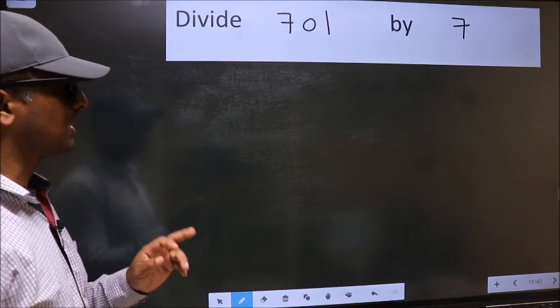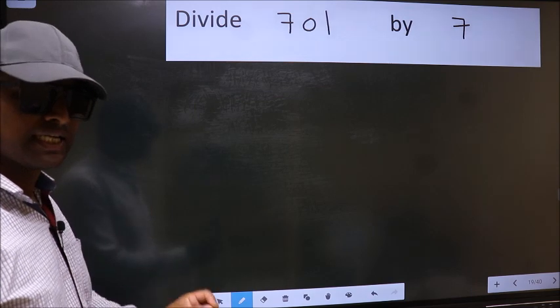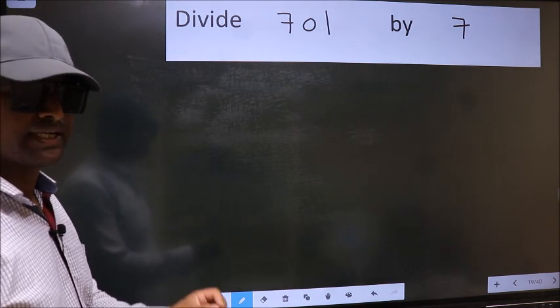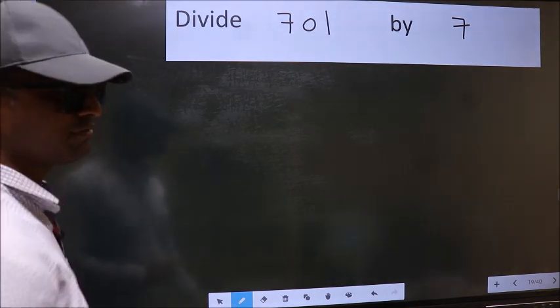Divide 701 by 7. While doing this division, many do this mistake. What is the mistake that they do? I will let you know. But before that, we should frame it in this way.